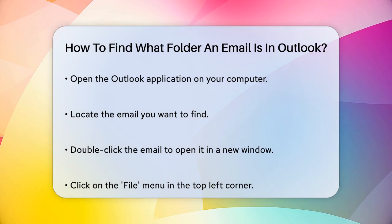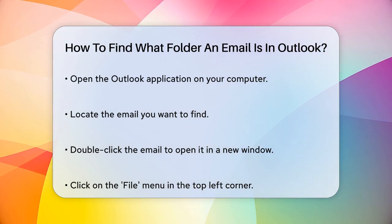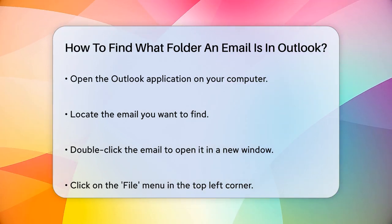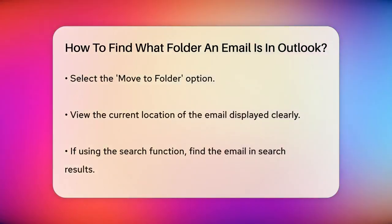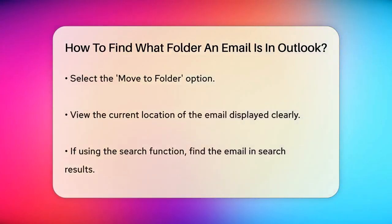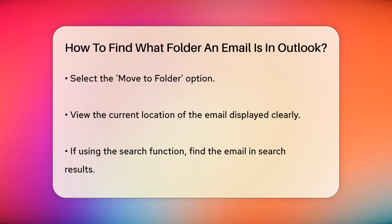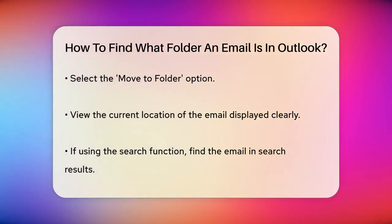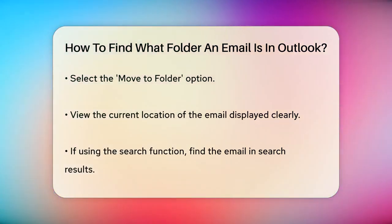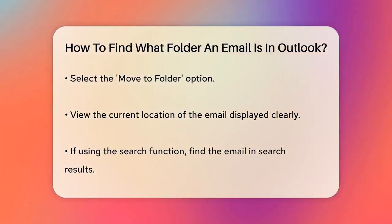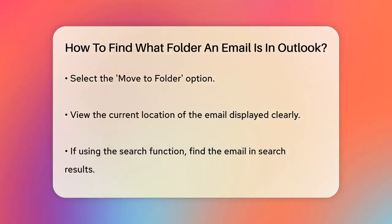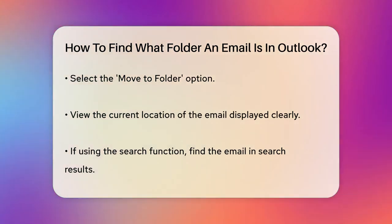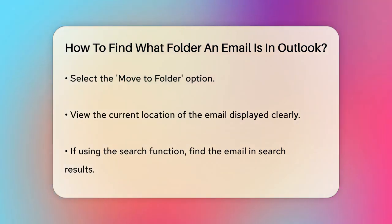First, open the Outlook application on your computer and find the email you're interested in. Double-click on the email to open it in its own window. Now look towards the top left corner and click on the File menu. Inside the File menu, navigate to the Move to Folder option. Here you'll see the current location of the message displayed clearly.